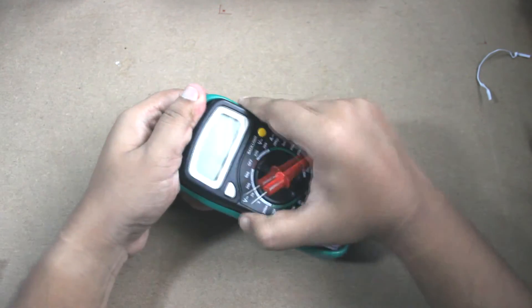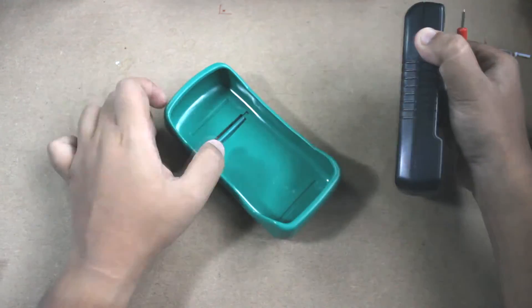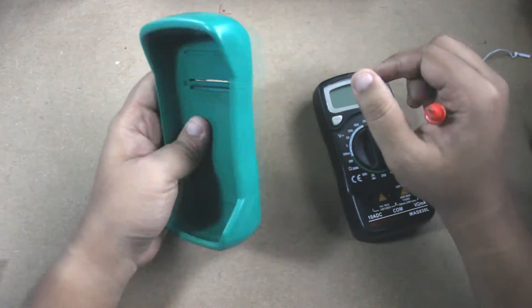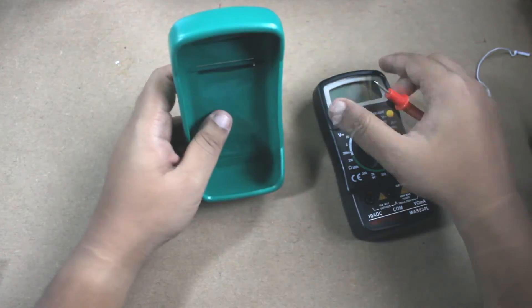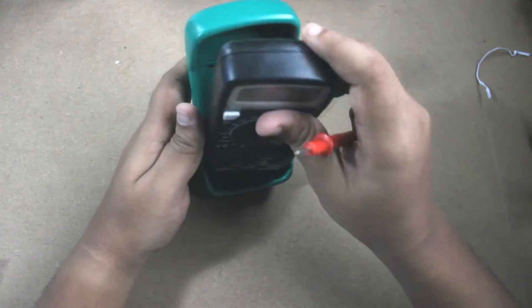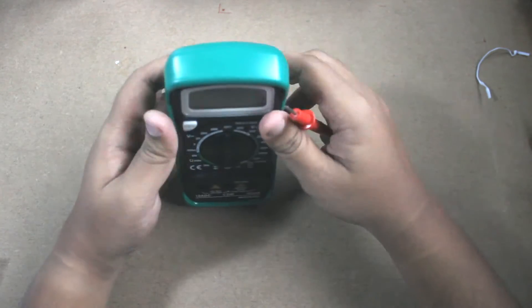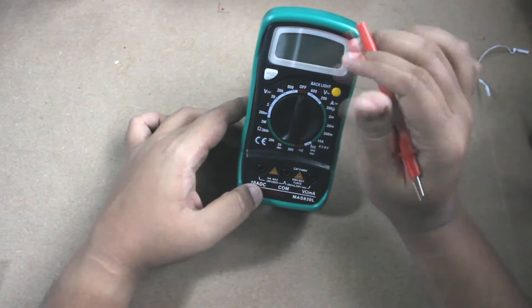It has a bumper case, I suppose. Yes, it is a bumper case, thick bumper case with a stand. Let's put it back in the bumper case. So that's it, it is the multimeter.